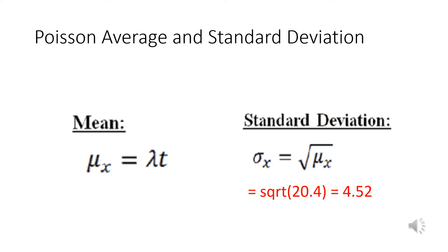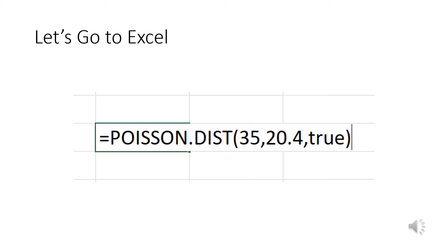We're going to treat it like any standard deviation. So let's go to Excel. This is the function I want: =POISSON.DIST, and in parentheses I'm going to put my actual value, which is 35, my mean, which we calculated to be 20.4, and true because I want 35 or more.